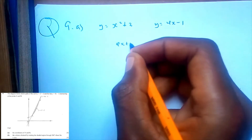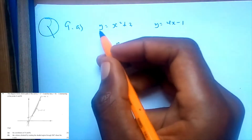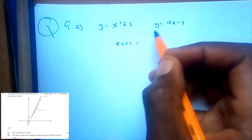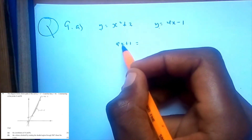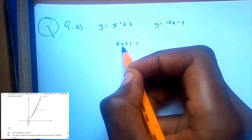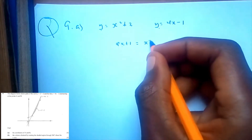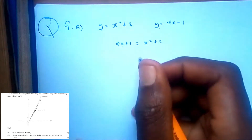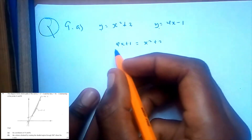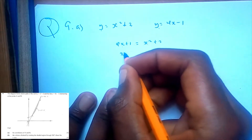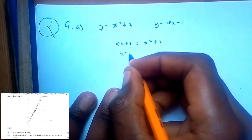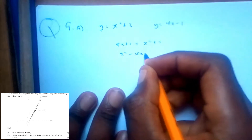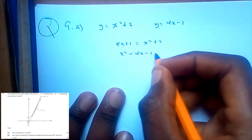The y-value of this equation is equal to the y-value of the other. So this and this are equal. This is going to be x squared minus 4x, and minus 1 plus 2 is equal to...